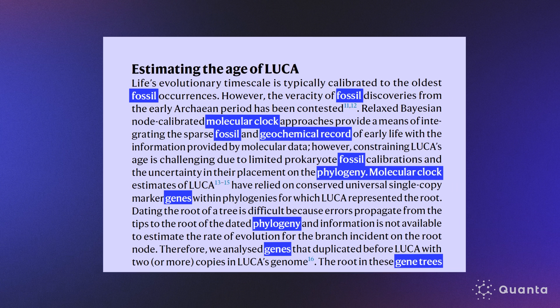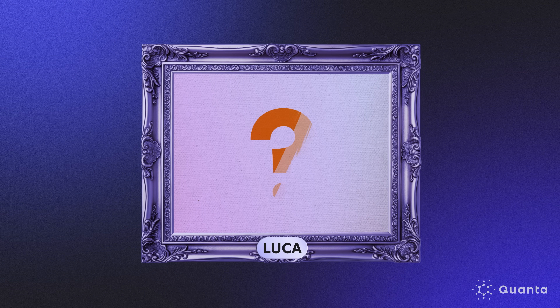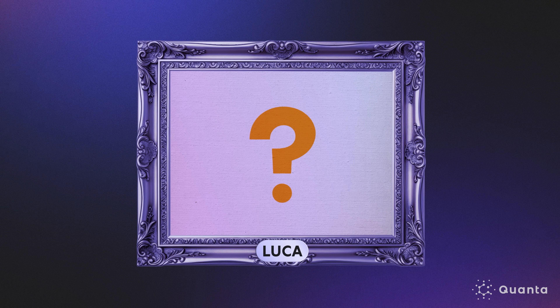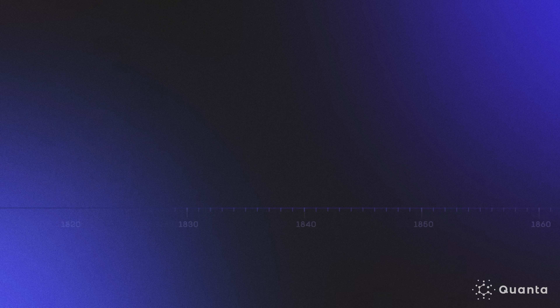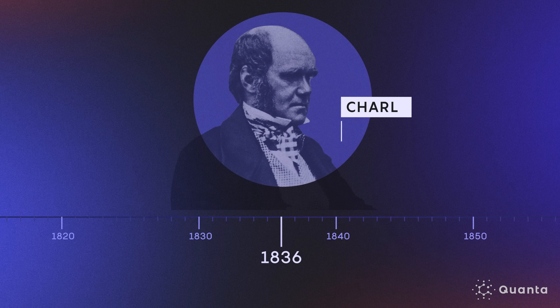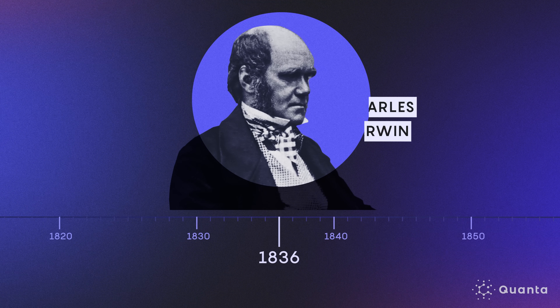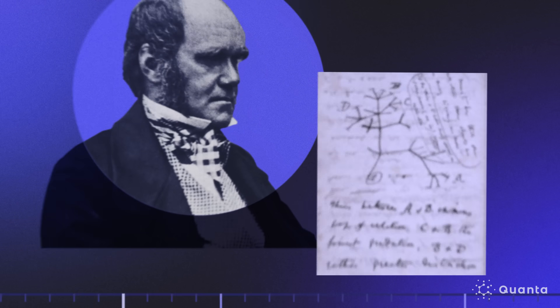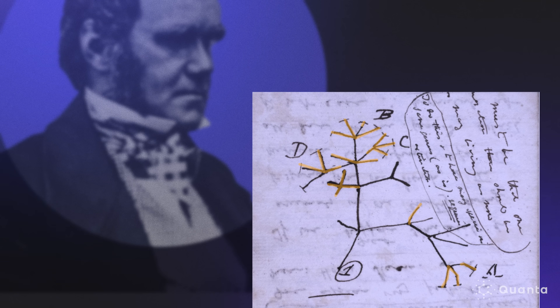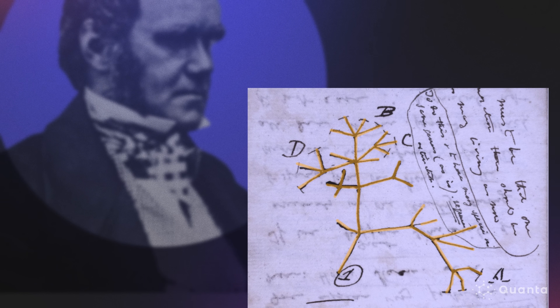They came up with a holistic understanding of when Luca existed and how it interacted with the environment. Ever since scientists realized that all life on Earth shares certain characteristics, that suggested there was some common ancestor. Darwin, in fact, in one of his letters said that if you trace his idea of evolution back to the very beginning, that would imply that there was some common ancestor.